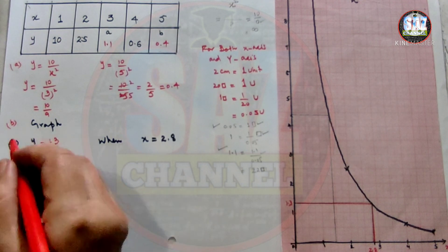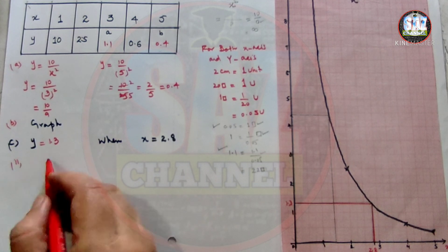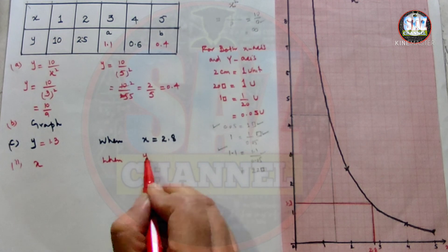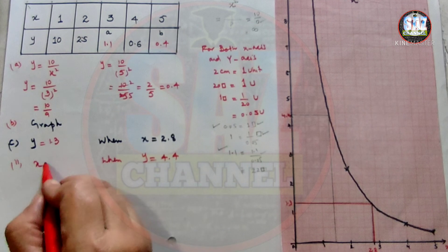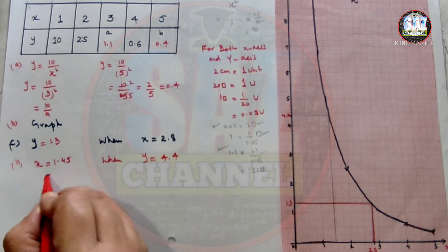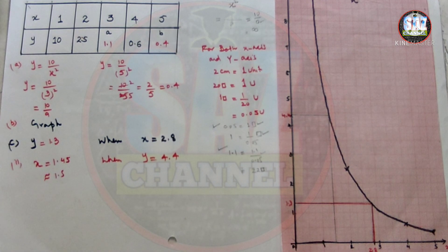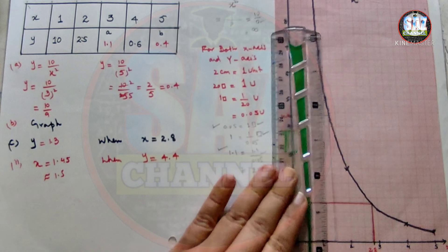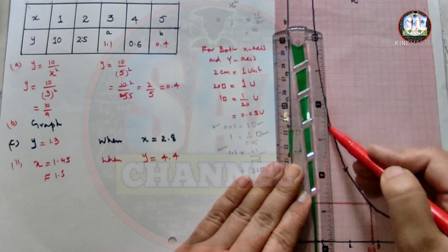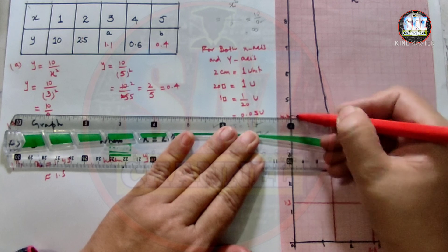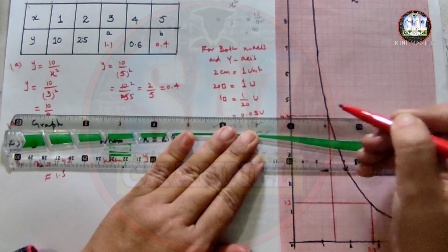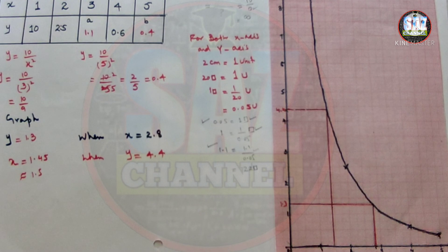Reading the x-axis value, we get approximately 9 blocks after 1. Nine blocks × 0.05 = 0.45, so x ≈ 1.45, which can be taken as approximately 1.5. So when y = 4.4, x ≈ 1.45. Please watch, like, share, and subscribe to the channel, and press the bell icon to get notifications. Thank you very much.